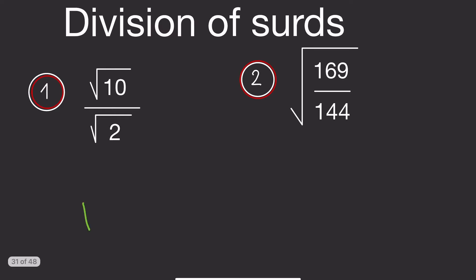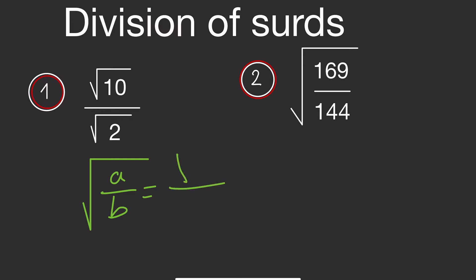So if we have the square root of A divided by B, this is the same as the square root of A divided by the square root of B.